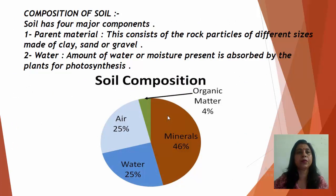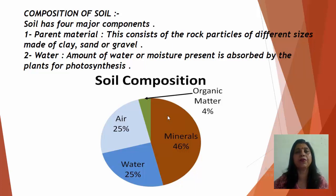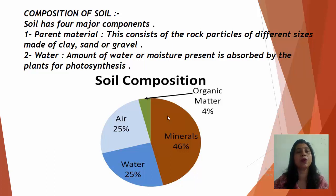Now, what is the composition of soil? Soil has four major components: parent material, water, air, and organic matter. The parent material consists of rock particles of different sizes made of clay, sand, or gravel, and constitutes around 44 to 46 percent of the soil. The second component is water — the moisture present in soil is absorbed by the plant for photosynthesis, and it constitutes around 25 percent of the total soil.